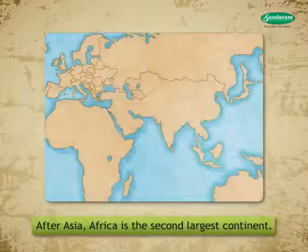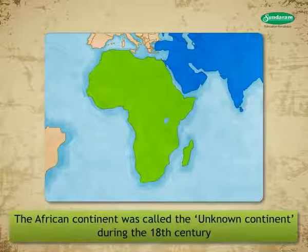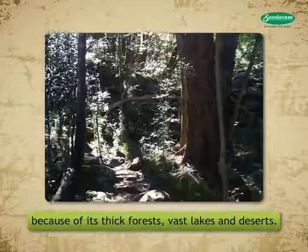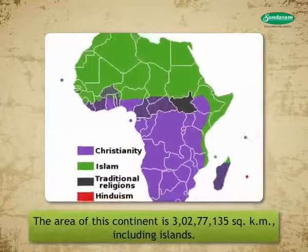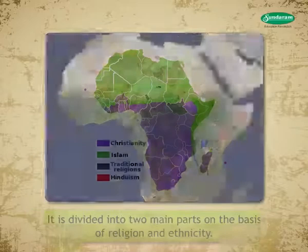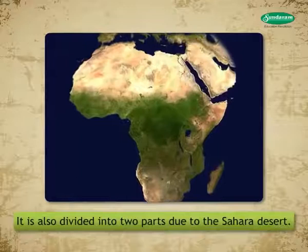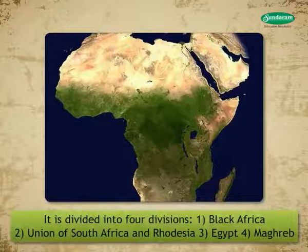After Asia, Africa is the second largest continent. The African continent was called the unknown continent during the 18th century because of its thick forests, vast lakes and deserts. The area of this continent is 3 crores 2,77,135 square kilometers including islands. It is divided into two main parts on the basis of religion and ethnicity.